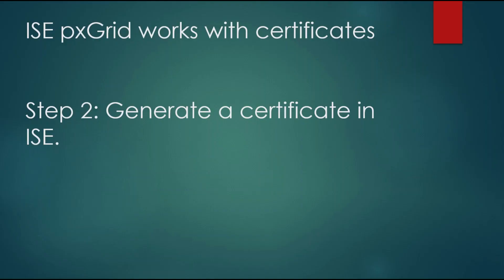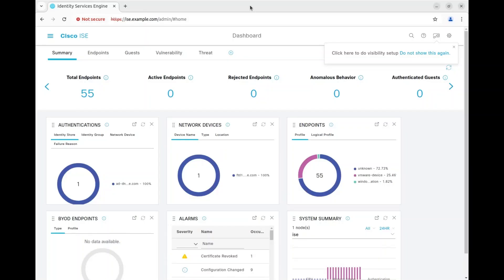Step two: go into ISE and generate a certificate. This isn't a tutorial on setting up ISE, passive identity, or connecting to Active Directory — there are many videos for that. This assumes ISE is already up and running, and we're just integrating our PNM sensor to pull information into Cisco XDR.